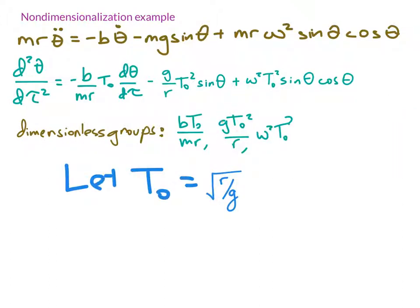To get rid of that group, I set T₀ equal to the square root of r over g, so that if I substitute back in that value of T₀, this center group would become one. And then I need to simplify these other groups by substituting in this new expression for T₀.